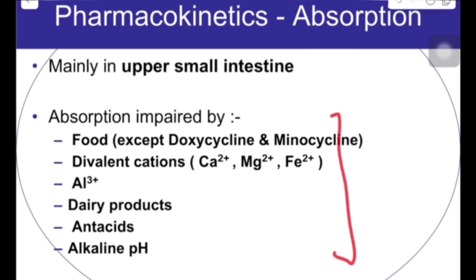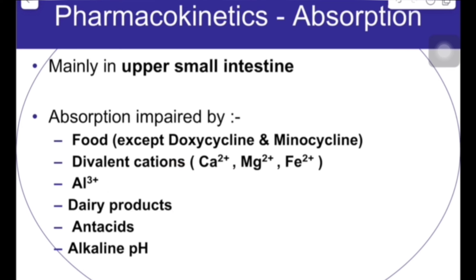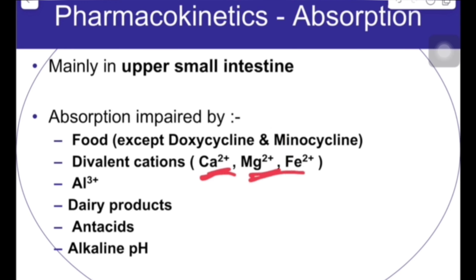Regarding pharmacokinetics, this is important for theory exam 'why' reasoning questions. You should be able to explain why tetracyclines are never given with milk, aluminium ions, calcium antacids, or dairy products. Tetracyclines cause chelation with divalent ions, leading to poor absorption. Therefore, tetracyclines are never given with food, divalent ions, or dairy products.